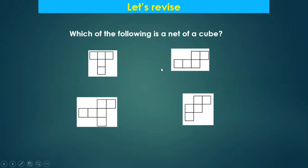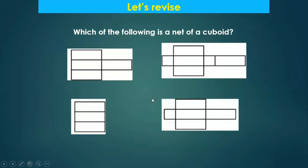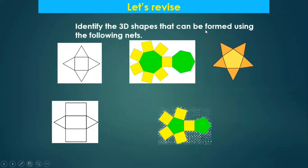Which of the following is the net of a cube? Remember the cube has six faces. Count the squares in each option — if it has only five, it is not possible. The option with six squares is the correct net of a cube. Which of the following is a net of a cuboid? Remember, a cuboid has six faces, so the net which has six rectangles will form a cuboid. Identify the 3D shapes formed using the following nets: a square-based pyramid, a heptagonal prism, a pentagonal pyramid, a triangular prism, and a pentagonal prism.